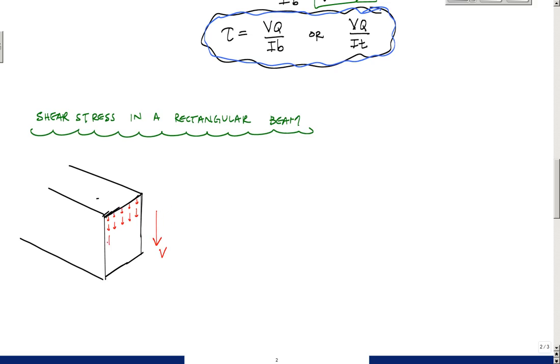They're distributed parabolically so that here at the location of the neutral axis, so let's say here is the neutral axis line N.A., the shear stress is max on the surface of the beam of the cut at the neutral axis. And then it gets smaller and smaller and so on and so forth.